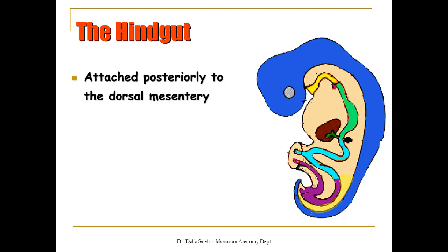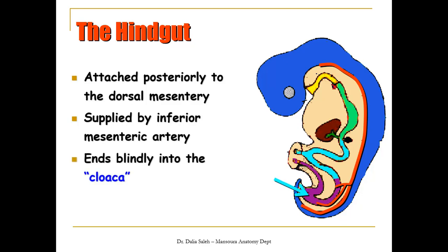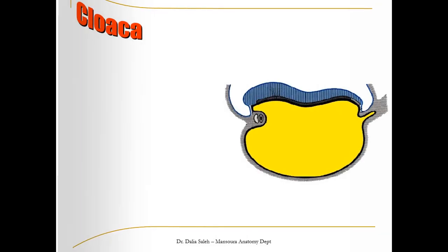If we look at this sagittal section of the embryo, we can notice that the hindgut is attached posteriorly to the posterior abdominal wall by the dorsal mesentery. The dorsal aorta gives its branches, and at this level there is the inferior mesenteric artery which will supply the hindgut. We can also see that the hindgut ends blindly in a pouch called the cloaca.